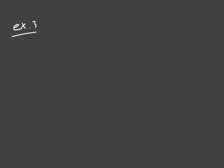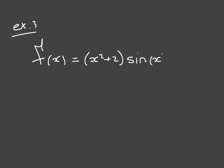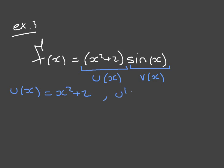Let's look at another example. We're given f(x) = (x² + 2) · sin(x). Once again, this is a product of two functions, and we can use the product rule. Organizing our work: u(x) = x² + 2, so u'(x) = 2x; and v(x) = sin(x), so v'(x) = cos(x).